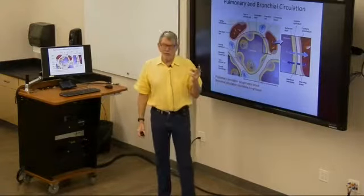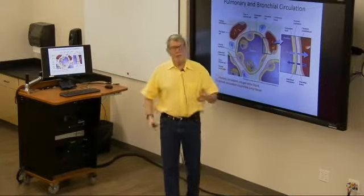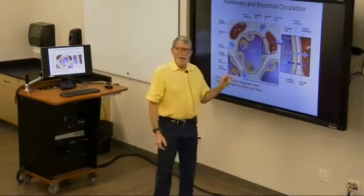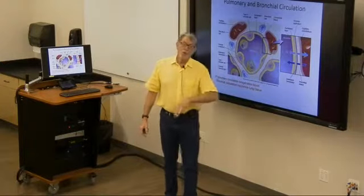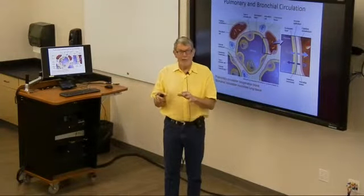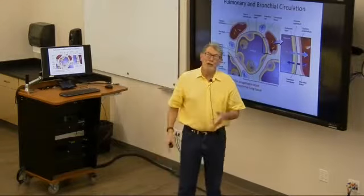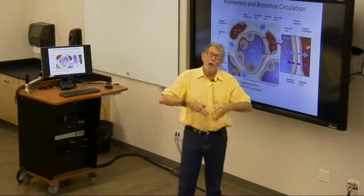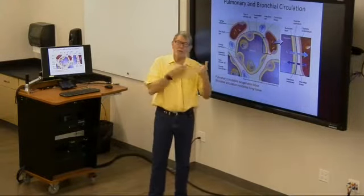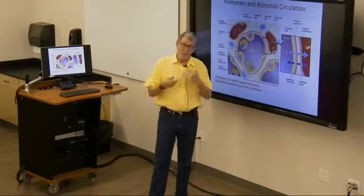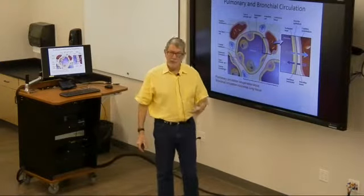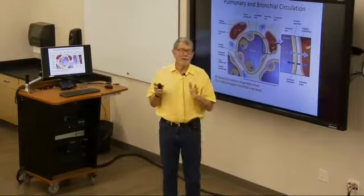There are two circulations. The pulmonary circulation comes from the right heart, goes through the lungs, gets oxygenated, and goes back to the left heart. You have a separate bronchial circulation that comes off your regular systemic side and takes blood to the lung tissue itself to nourish it — similar to how cardiac blood vessels nourish the heart muscle. The bronchial circulation takes a very small amount of blood and nourishes the lung tissue.